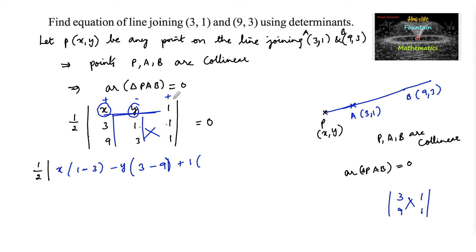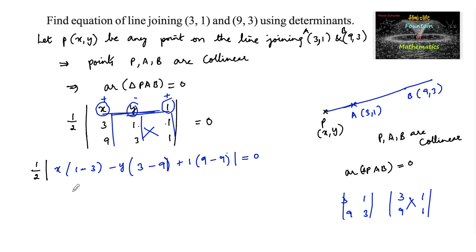The remaining minor (deleting the first row and third column) gives |3 1; 9 3| = 3×3 − 9×1 = 9 − 9 = 0. So we have one-half times the modulus of: (−2)x − (−6)y + 0 = 0, which simplifies to one-half |−2x + 6y| = 0.